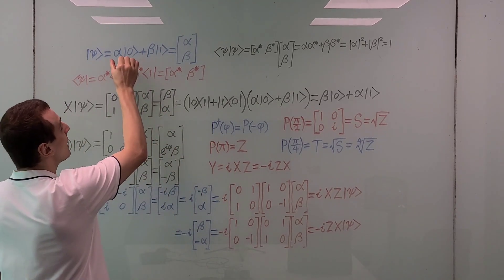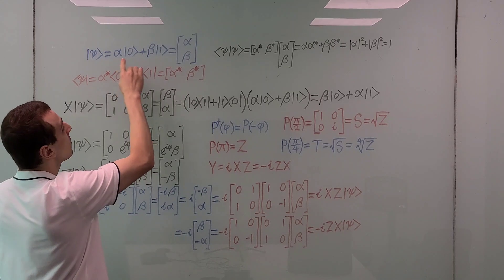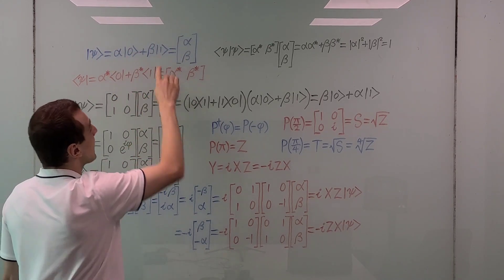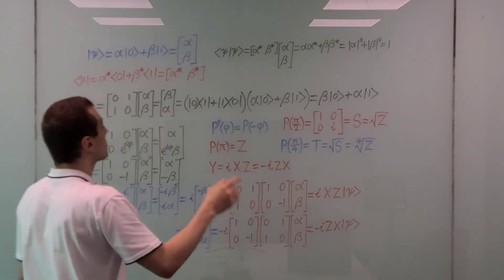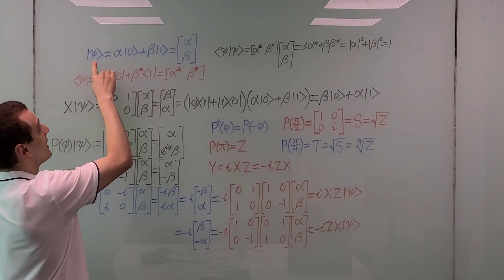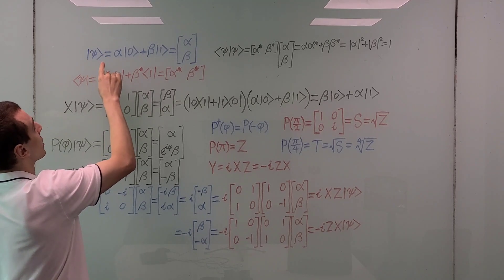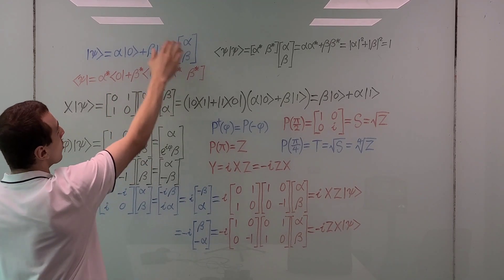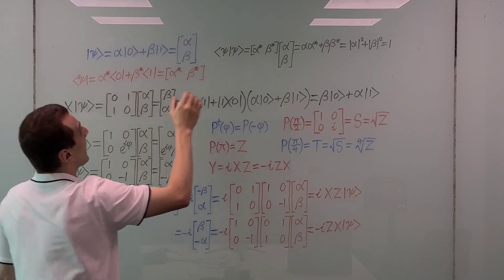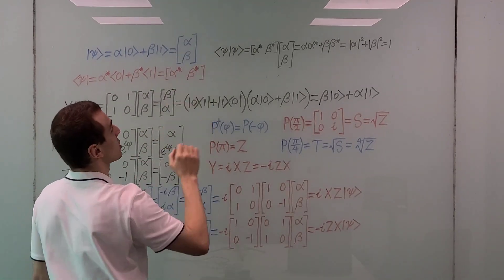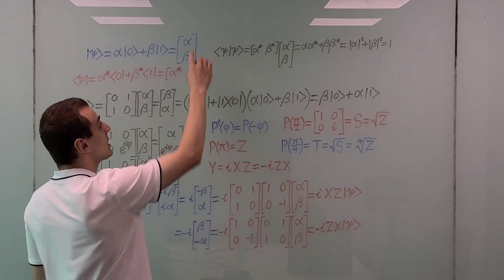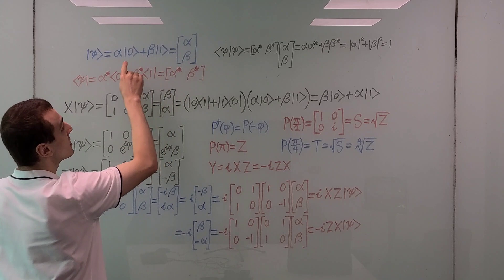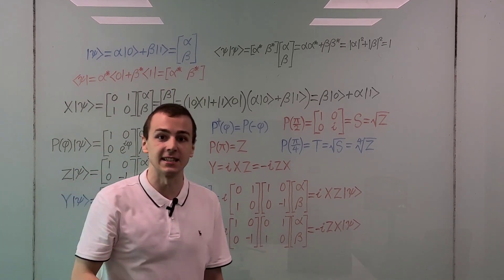What we're going to do is take a linear combination with coefficients alpha and beta. This linear combination represents a general state, denoted by psi. You can see Dirac notation here — these are all kets. We can also represent this as a column vector, which is the matrix representation. It's a column vector, and the entries are the coefficients of these computational basis states.